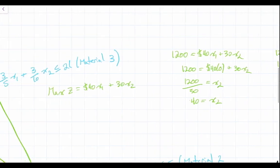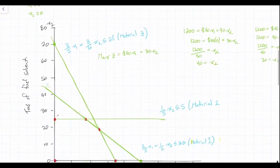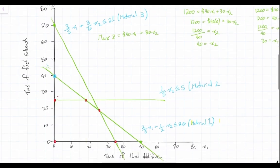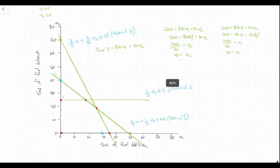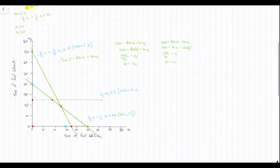So our objective function intercepts the x1 and x2 axes at 30 and 40 respectively. We can go to our graph and draw that — x2 at 40 and x1 at 30 — and we draw our line through these points. This is our objective function line.